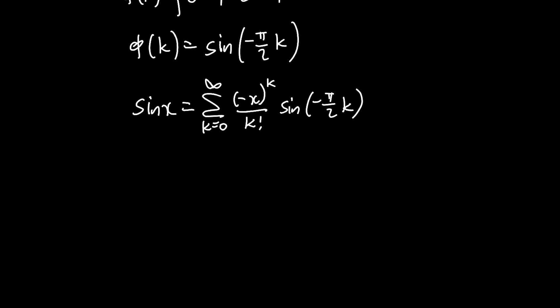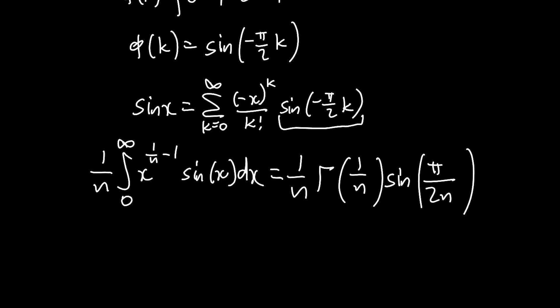So if we write our original integral down, 1 over n times the integral between 0 and infinity, x to the power of 1 over n minus 1 times sine of x. We can now use Ramanujan's master theorem and say that this is 1 over n, and this is going to be gamma of s, and here s is 1 over n, so gamma of 1 over n. And now phi of minus s is basically just going to plug in k equals minus 1 over n into here, so we just get sine of pi over 2n. And that's it. That's our integral down, just like that, using Ramanujan's master theorem.